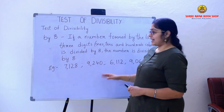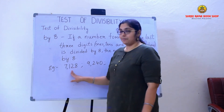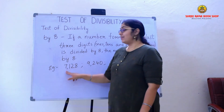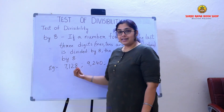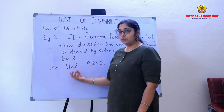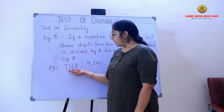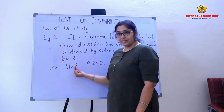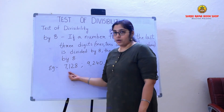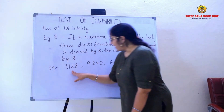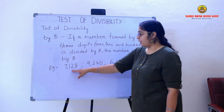To have a better understanding, I have taken some examples on the board. The first example is 7128. We can see that the last three digits are 1, 2, and 8 — so in the 1's column it is 8, in the 10's column it is 2, and in the 100's column it is 1, giving us 128.